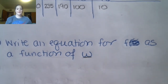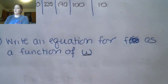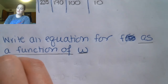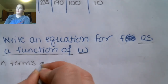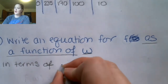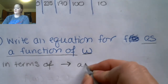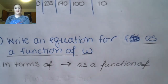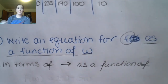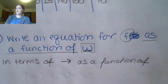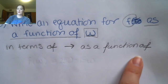For part B, it says write an equation for F as a function of W. Here's a signal phrase. Before we were using 'in terms of,' and that was telling us what the input and output variables were. Now we're going to switch to using the phrase 'as a function of.' This still gives the same idea: F is the output variable, and W is the input variable.